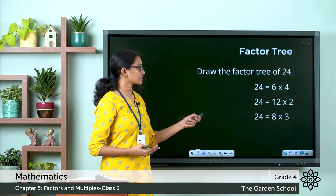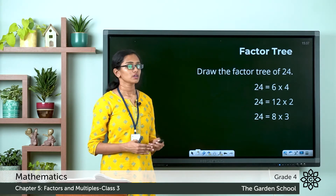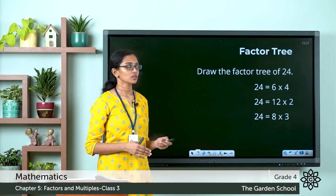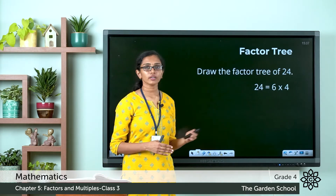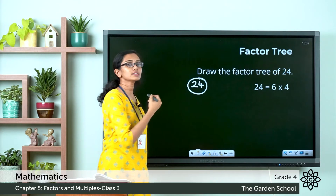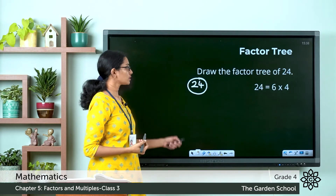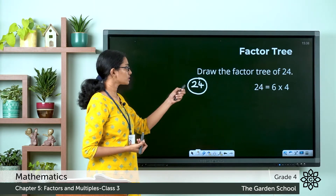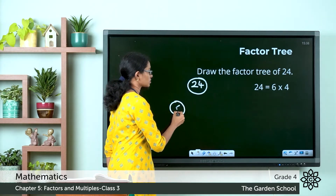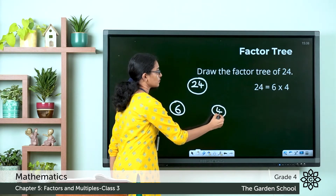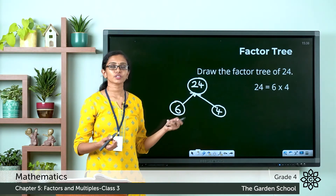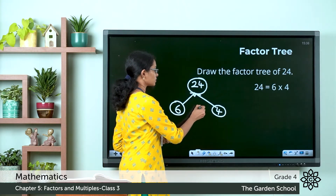Consider the first case: 24 is equal to 6 into 4. Let us see how we can draw a factor tree with these factors. First, the given number 24 is written inside a circle. Below this circle we are going to draw another two circles — one will be 6 and one will be 4 — and we are going to use arrows. So 24 is equal to 6 into 4.